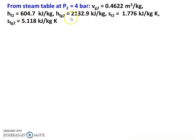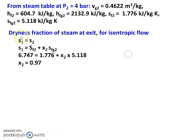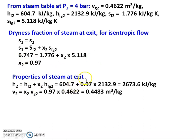From steam table at P2 = 4 bar: VG2 = 0.4622 m³/kg, HF2 = 604.7 kJ/kg, HFG2 = 2132.9 kJ/kg, SF2 = 1.776 and SFG2 = 5.118 kJ/kg·K. For isentropic flow, S1 = S2: 6.747 = 1.776 + X2 × 5.118, giving X2 = 0.97. Properties at exit: H2 = 604.7 + 0.97 × 2132.9 = 2673.6 kJ/kg, and V2 = X2 × VG2 = 0.97 × 0.4622 = 0.4483 m³/kg.